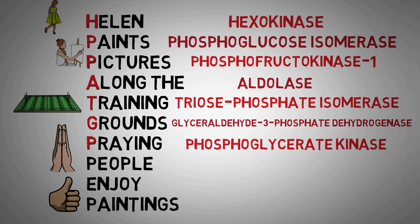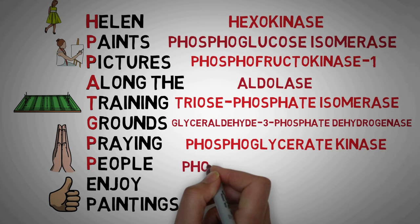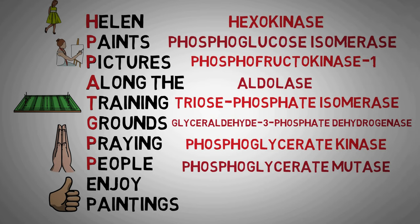Next letter we have in the mnemonic is a P, which stands for phosphoglycerate kinase. This kinase catalyzes the conversion of 1,3-bisphosphoglycerate to 3-phosphoglycerate. Next we have a P again, and this stands for phosphoglycerate mutase, the enzyme which converted 3-phosphoglycerate to 2-phosphoglycerate.